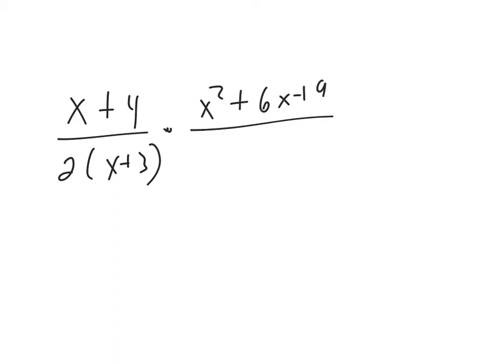And then we went into multiplying where we had (x plus 4) over 2 times (x plus 3), and then we have x squared plus 6x plus 9. And then maybe we had 2x plus 8. And so, you know, these two guys over here can't be simplified, okay?